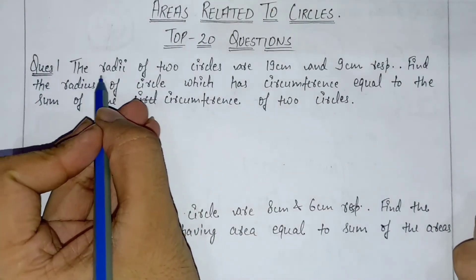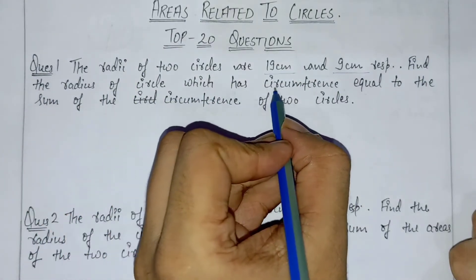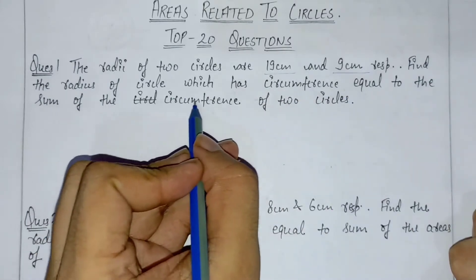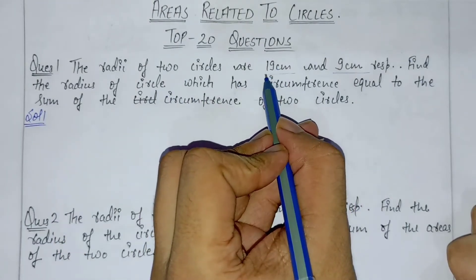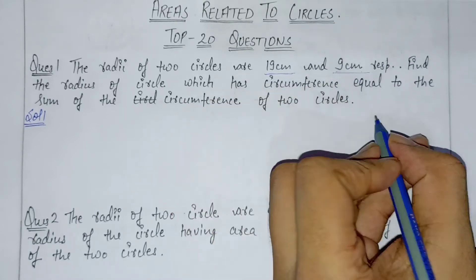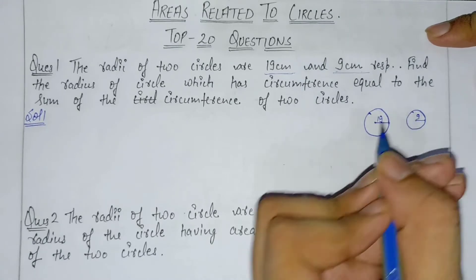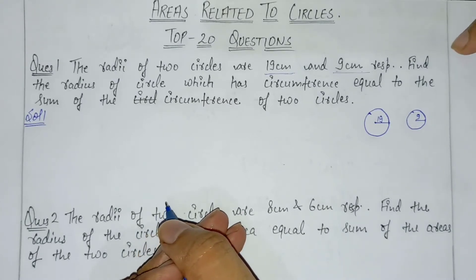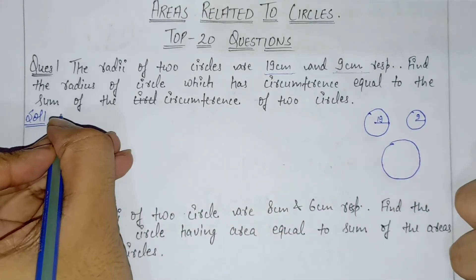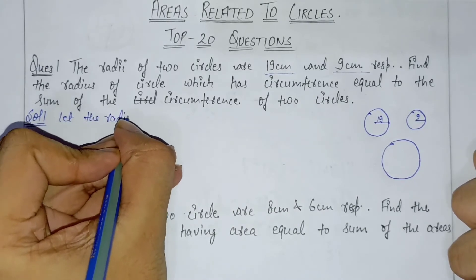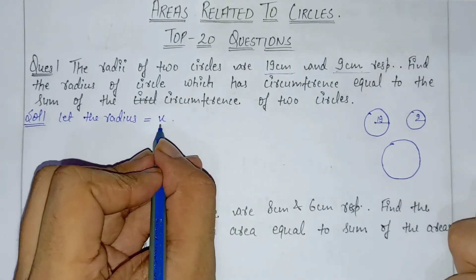Question number one: the radii of two circles are 19 cm and 9 cm. Find the radius of the circle which has circumference equal to the sum of the circumferences of the two circles. So we have one circle of radius 19 cm and one circle of radius 9 cm. Let the radius of the new circle be x.